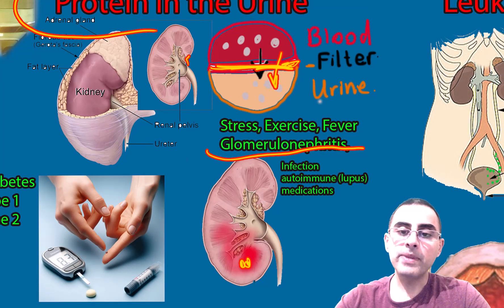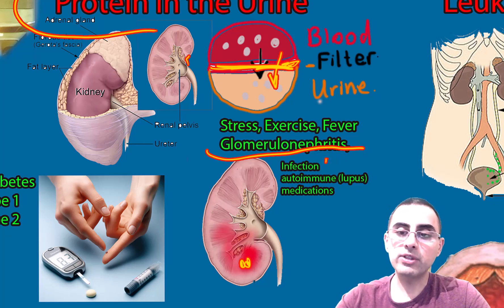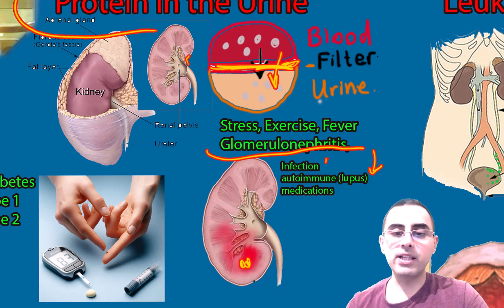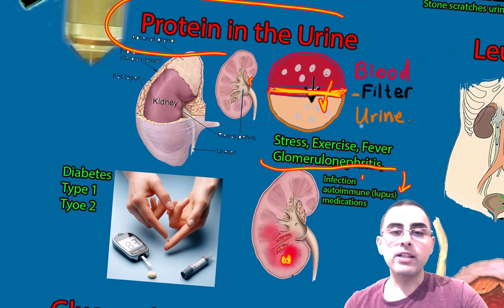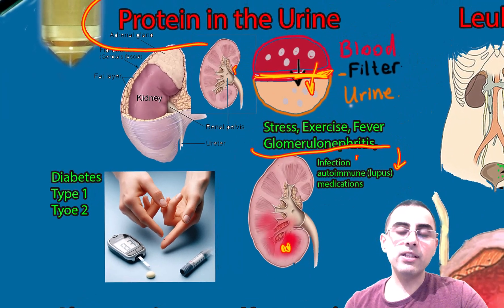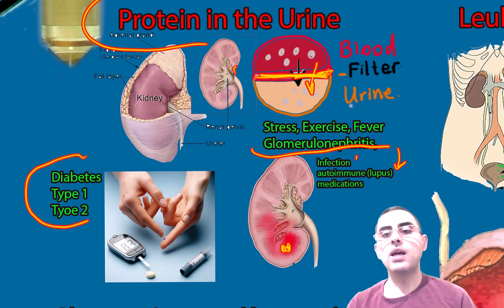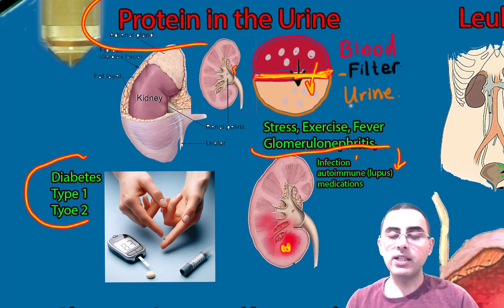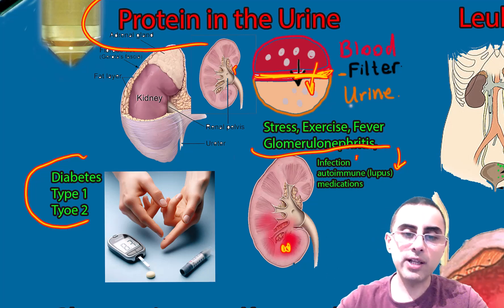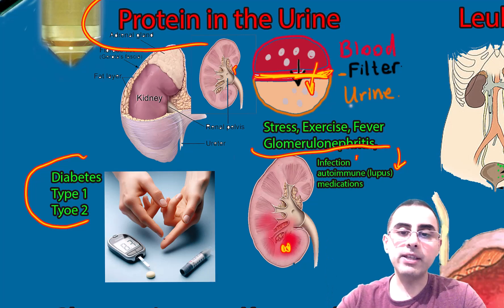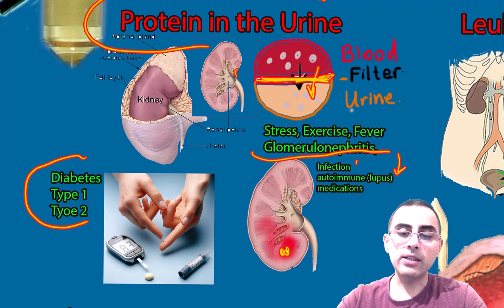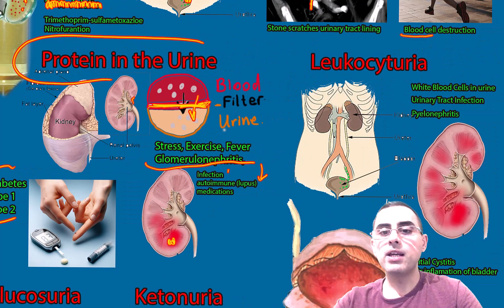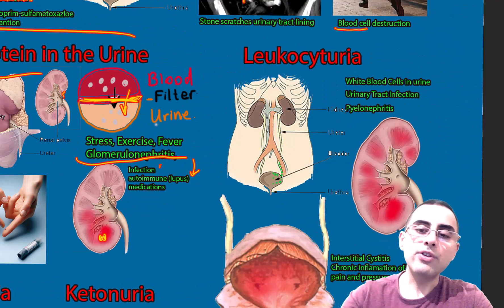Persistent proteinuria is usually caused by glomerulonephritis. Glomeruli are the filtration apparatus in the kidneys, and their destruction causes glomerulonephritis and proteinuria. The most common causes include infection, autoimmune disorders such as lupus, certain medications, and diabetes — both type 1 and type 2 — where prolonged elevated blood glucose damages the glomeruli.